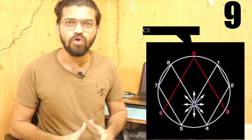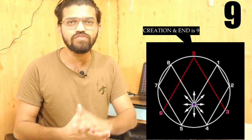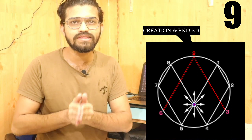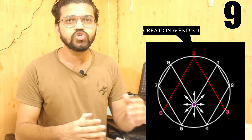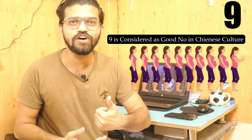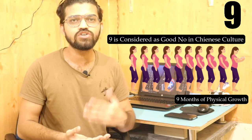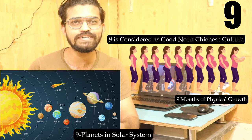Number nine is the greatest of all — energy originates from number nine and flows to the rest of the physical world. There is a triangular sequence where energy flows between three, six, and nine, and number nine governs all of the physical world. Nine is considered a good number in Chinese culture. During pregnancy it takes nine months to develop a human body, and our solar system has a total of nine planets.